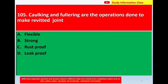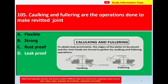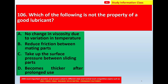Question number 105: Caulking and fullering are operations done to make a riveted joint — option A: flexible, option B: strong, option C: rust proof, option D: leak proof. Correct answer is leak proof. Caulking and fullering are used to obtain a leak-proof joint; the edges of the plates to be joined and the rivet heads are forced together by caulking and fullering operations. Correct answer is option D — leak proof.